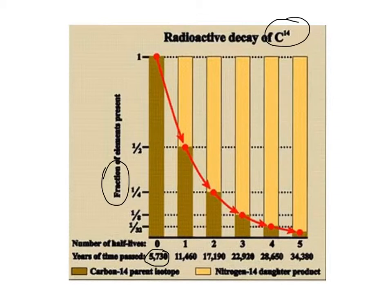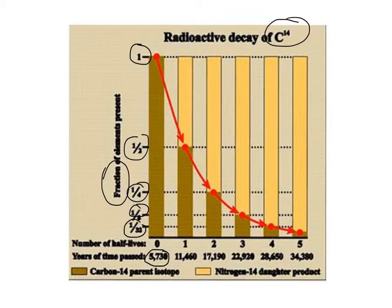So 1 over 1 is 1, then we have a half, then we have a quarter, then we have 1 over 8, then 1 over 16, and 1 over 32. That's how our fractions go. This could also be presented in terms of percents — so this could be 100%, 50%, 25%, 12.5%, and onward.